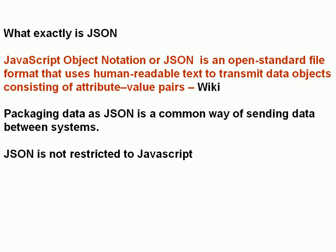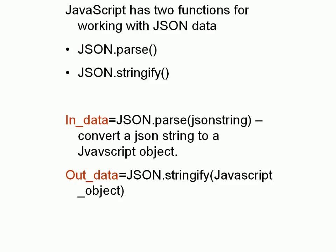JSON, although it started life with JavaScript, is not restricted to JavaScript. There are functions in all of the major programming languages for converting from JSON format to an internal format. In JavaScript, there are two functions that you'll use: JSON.parse and JSON.stringify. JSON.parse converts from a JSON string into a JavaScript object. You pass the JSON string to JSON.parse and you get a JavaScript object back. The stringify function is the opposite — you give it a JavaScript object and it gives you back a JSON string. Parsing is when you're bringing data into the system, and stringify is when you're sending data out.